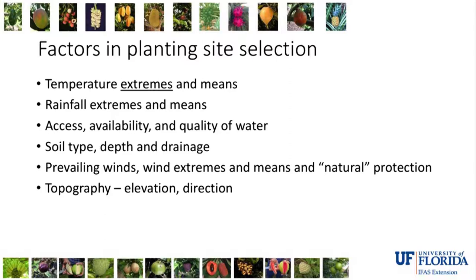Rainfall extremes and means also matter. Mango trees planted in lowland tropical areas will usually grow well, but disease pressure on the flowers and fruit — especially if the wet season coincides with flowering and fruiting — can mean very little production. Access, availability, and quality of water are also important. Most trees will benefit from water access during the specific period from flowering to harvest; before and after that period it's not as critical, but during that period you'll optimize production.